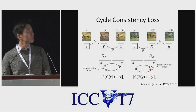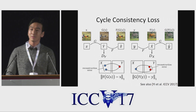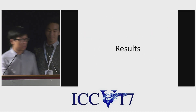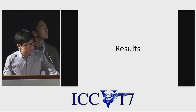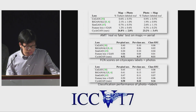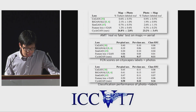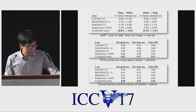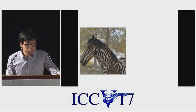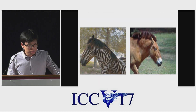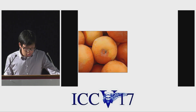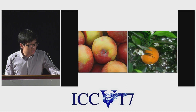We do the same thing in the opposite direction. So let's look at some results. Of course, we have the best numbers, but it's more fun to look at some zebras. Here, CycleGAN learns to transform a horse into a zebra, or an orange into an apple.